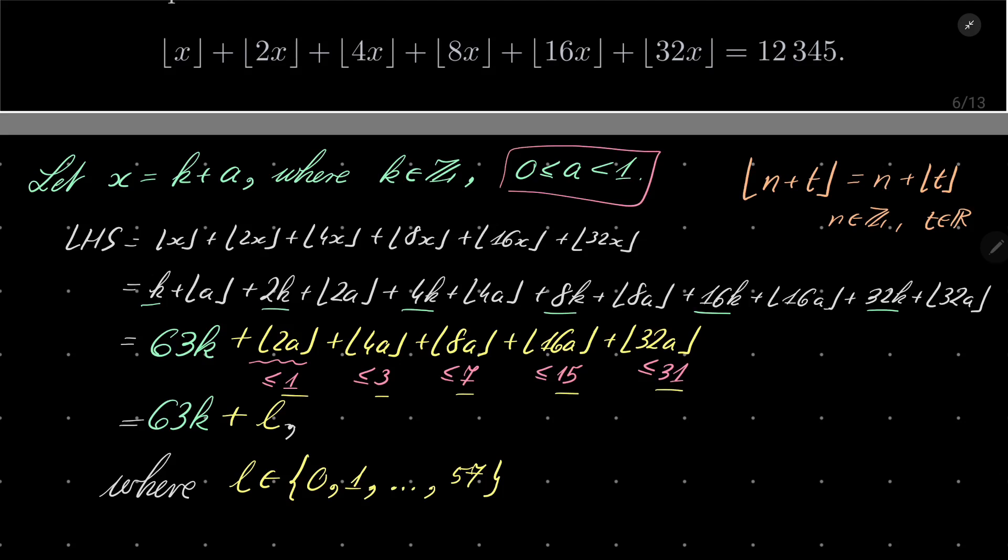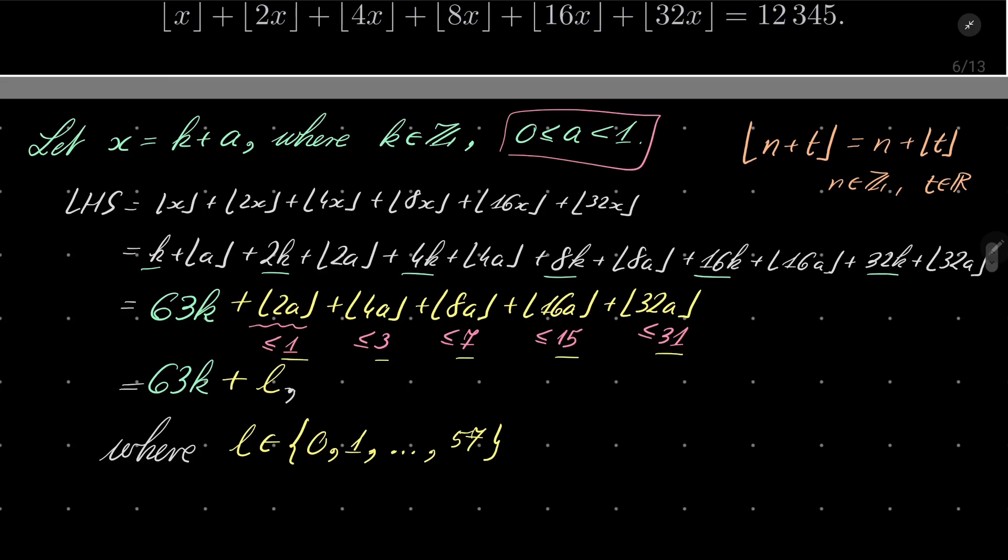Let me get it right: 1 plus 3 is 4, 4 plus 7 is 11, 11 plus 15 is 26, 26 plus 31 is 57. Yes.